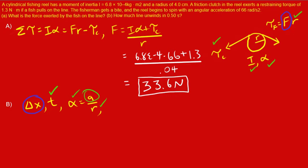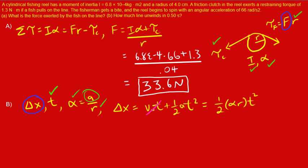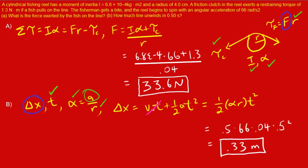Green checkmarks indicate given values. A green circle is something not explicitly given but that we can solve for — so it's almost like a given — and a blue circle means it's the desired variable. Thinking back to the kinematics equations from Physics 101, the equation that best fits is delta x equals V-naught times t plus one-half a t-squared. V-naught is zero because it starts from rest, so after substitution you get one-half alpha r t-squared. Plugging in gives a final answer of 0.33 meters.